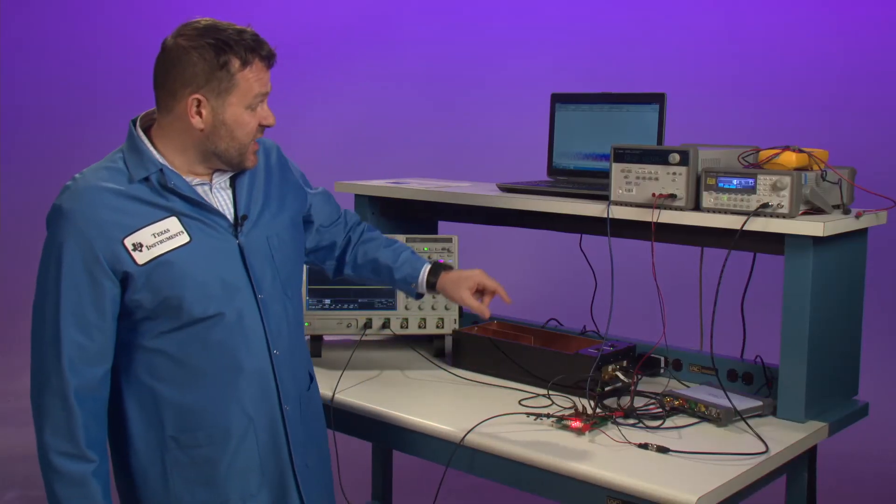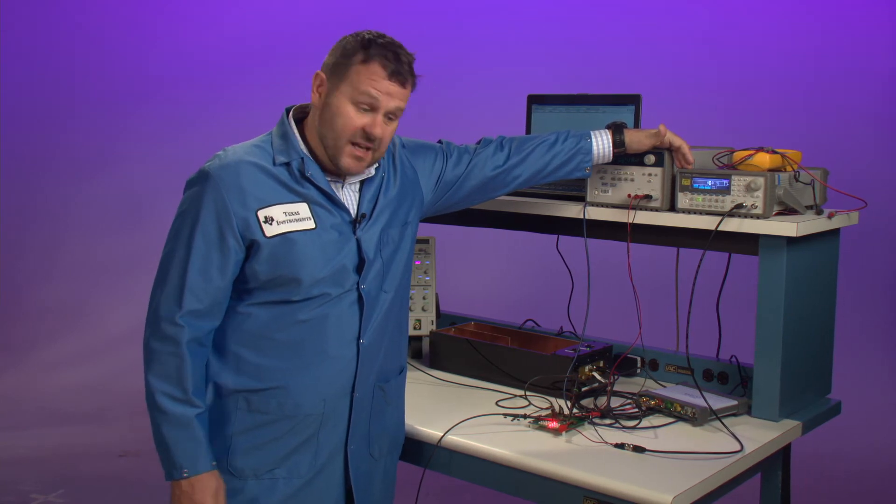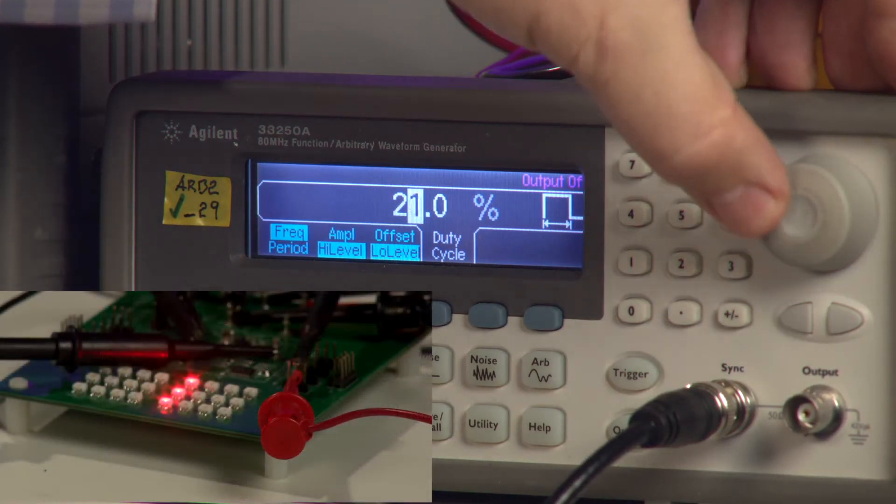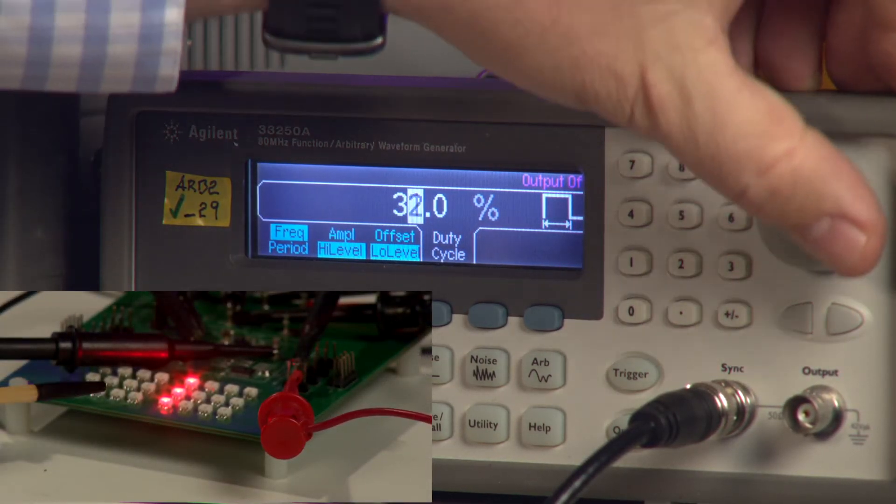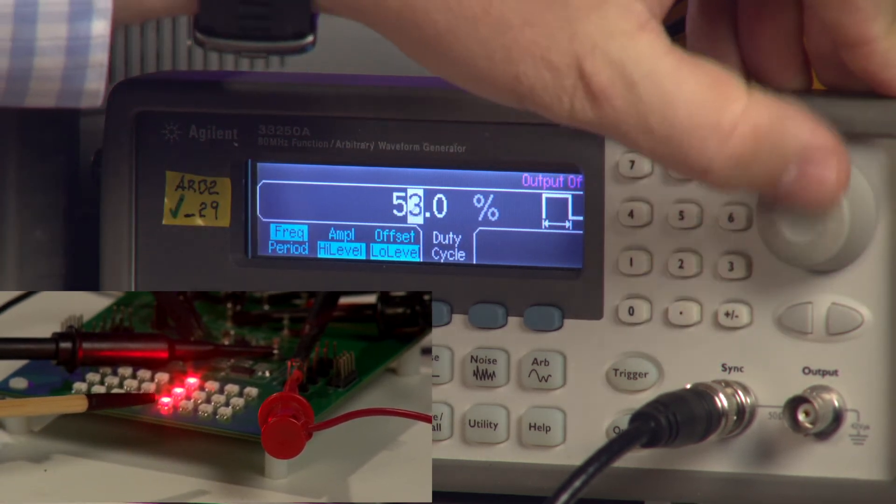I'm going to change the PWM generator up and down. What you should be able to see is an even illumination of the LEDs down here. As I increase the generator in terms of its duty cycle, you can see the LEDs getting more illuminated.